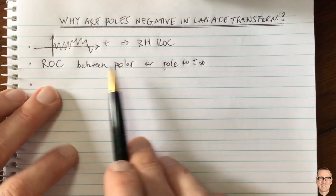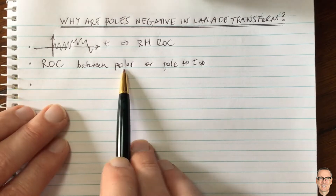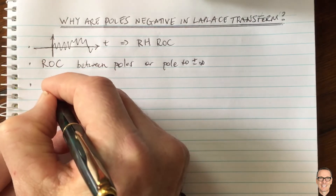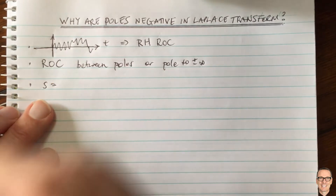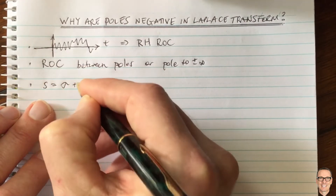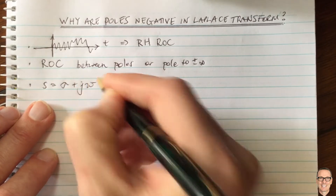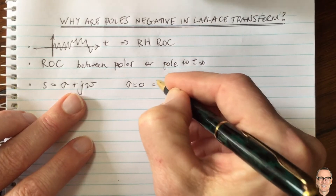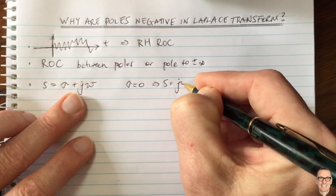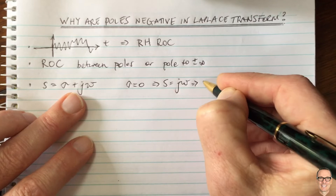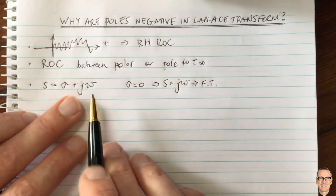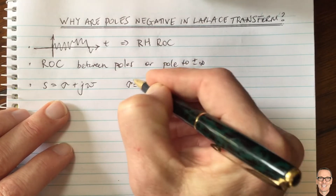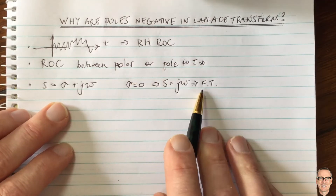That's another property about poles and the region of convergence. The third property is that the Laplace variable s is a complex number that equals σ plus jω. So if σ equals zero, that implies s equals jω, and that implies we have the Fourier transform. So the Laplace transform, when you set σ equal to zero, equals the Fourier transform — it's the same as the Fourier transform.